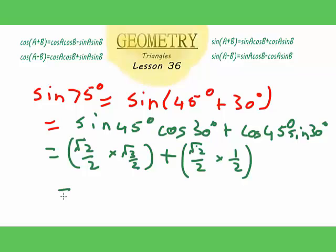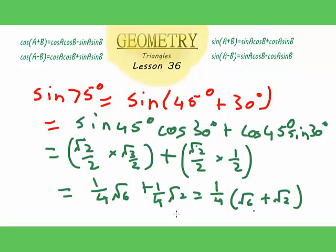And this is equal to 1 over 4 root 6 plus 1 over 4 root 2. And as in the last example, we take out the fraction, so it's 1 over 4 square root of 6 plus square root of 2.